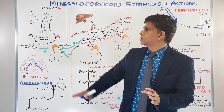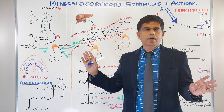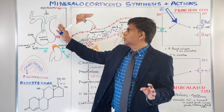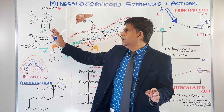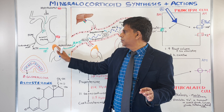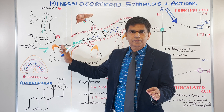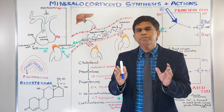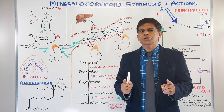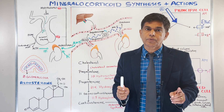We have to go back to the brain — look at the hypothalamus and the anterior pituitary. You have the hypothalamus releasing corticotropin-releasing hormone (CRH) going into the anterior pituitary, which releases ACTH. ACTH goes to the adrenal gland and can stimulate aldosterone production, but it's not the major mechanism.